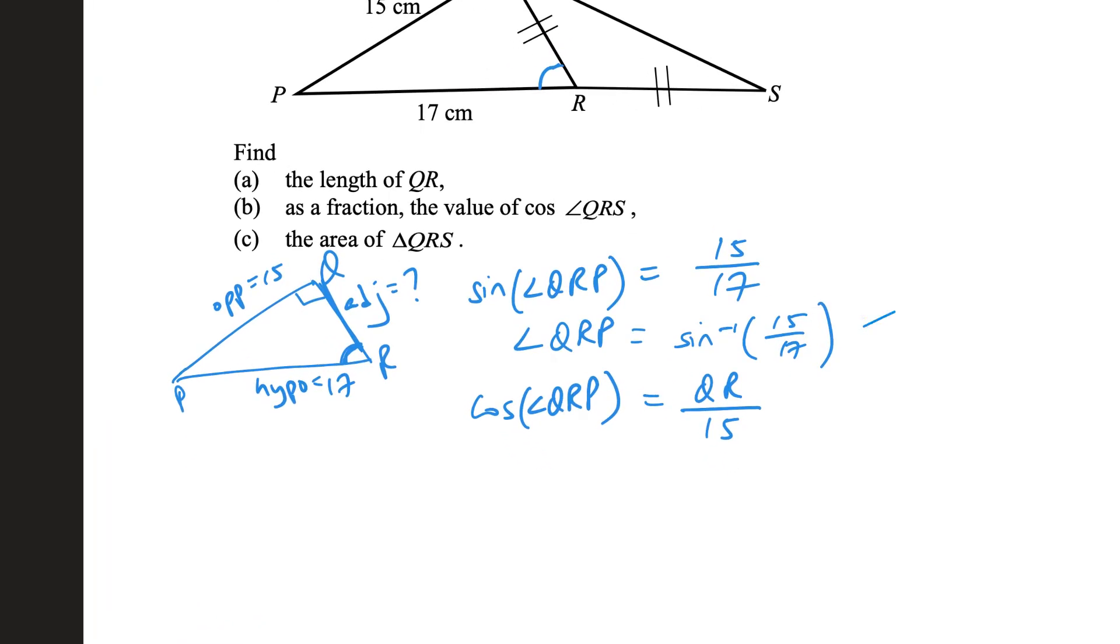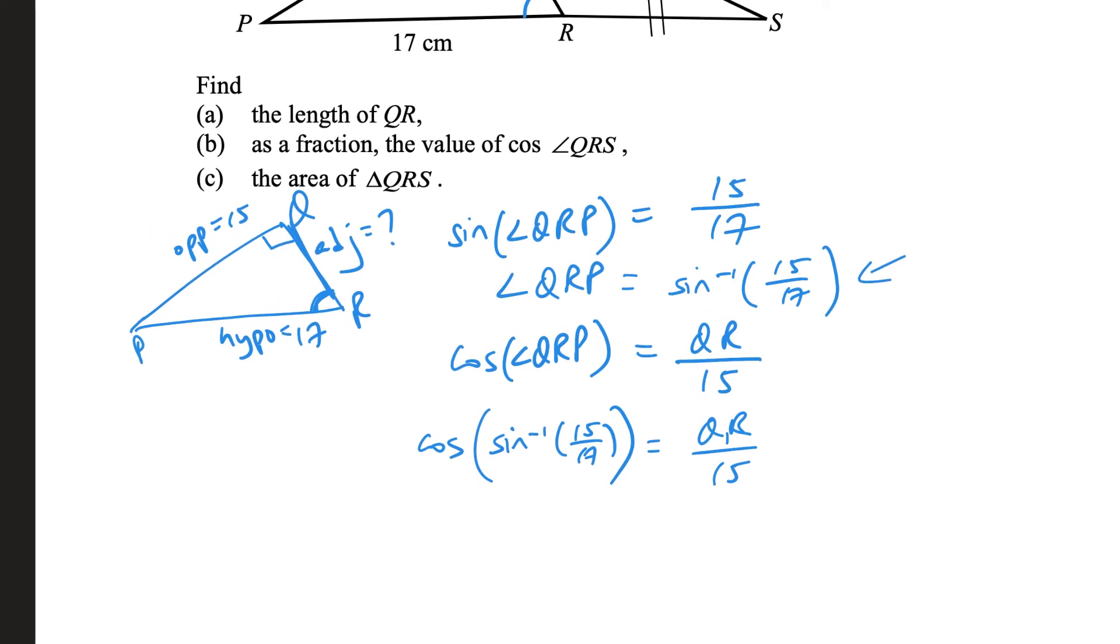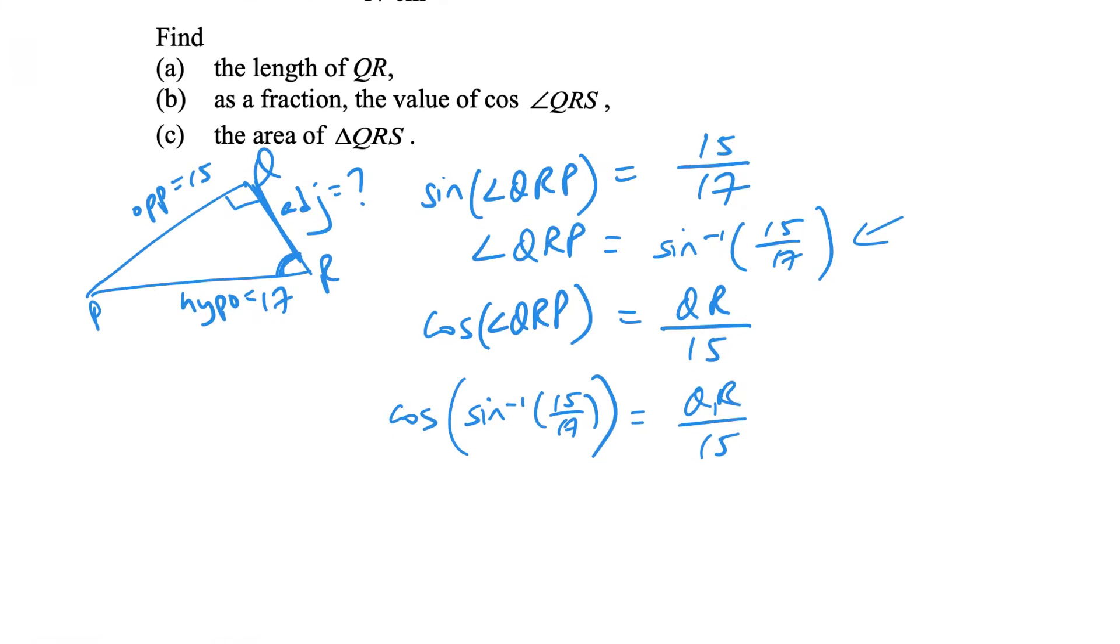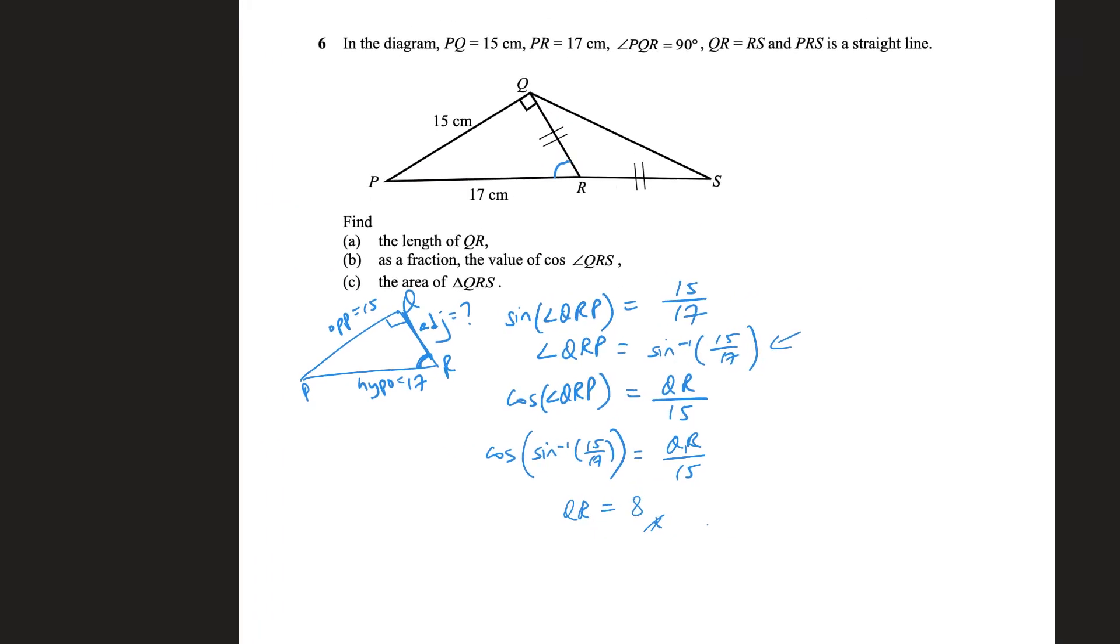And what is QRP? It's simply this. So I can say cosine and I plug it in, equals to QR over 15. I'm doing this so I don't have to round up or down. Just key this in first in the calculator, and then cosine the result. And then after that, you multiply it by 15. So what you get is simply that QR equals to 8 cm.